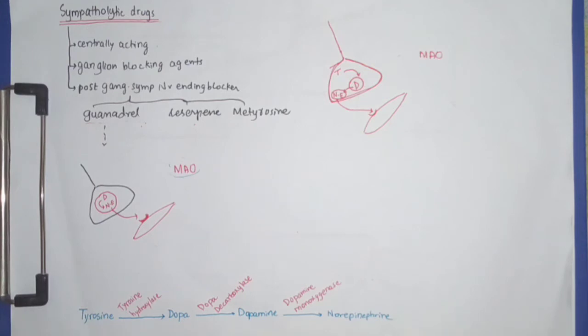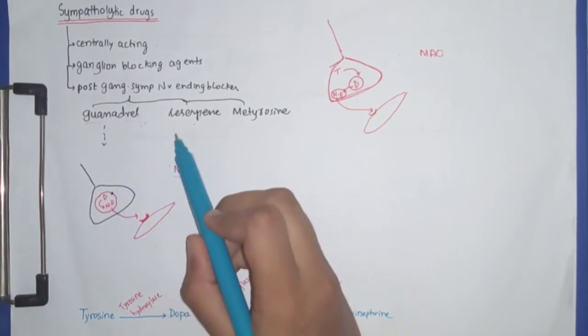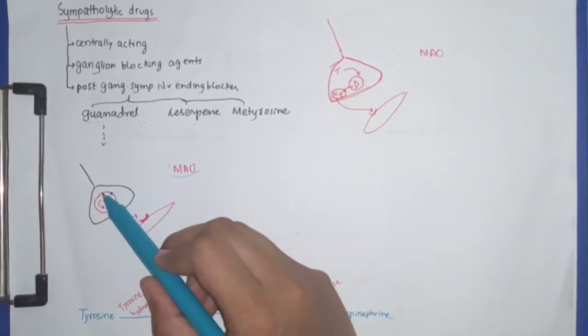the monoamines like serotonin, dopamine, and norepinephrine. Reserpine basically inhibits those uptake transporters. If those uptake transporters are inhibited, dopamine will not be taken up by the cell or